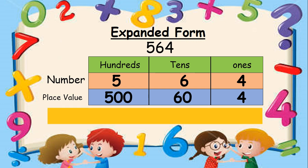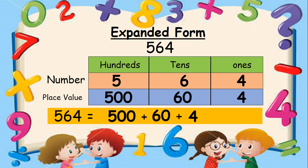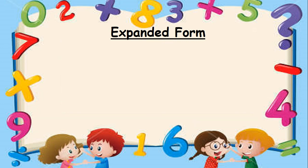Step 3: write 564 as the sum of the place value of its digits. That is, 564 is equal to 500 plus 60 plus 4, which is the expanded form. I hope you have understood. Let us try some more examples.